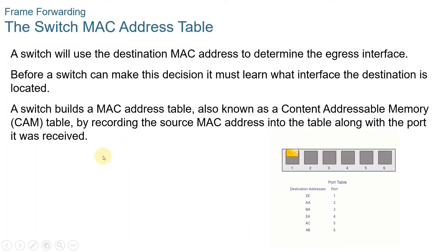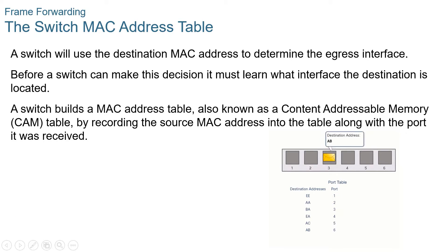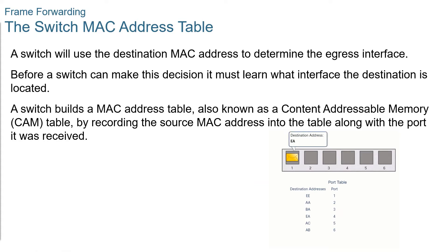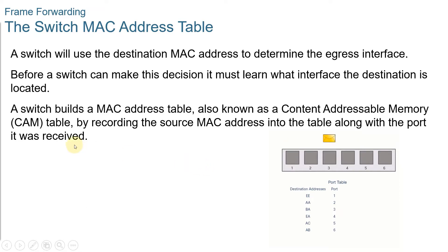A switch is made up of integrated circuits and accompanying software that controls the data passing through it. Switches use destination MAC addresses to direct network communications through the switch out the appropriate port towards the destination. For a switch to know which port to use to transmit a frame, it must learn which device exists on each port. As the switch learns the relationship of ports to devices, it builds a table called the MAC address table. This table is stored in content addressable memory or CAM, a special type of memory used in high-speed searching applications. For this reason, the MAC address table is sometimes called the CAM table.